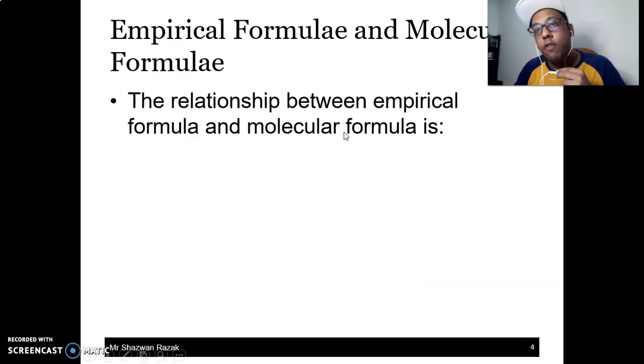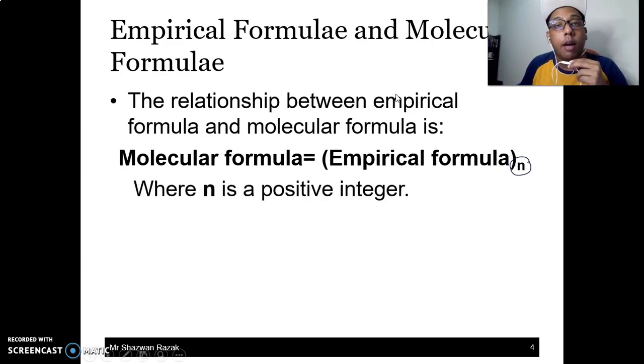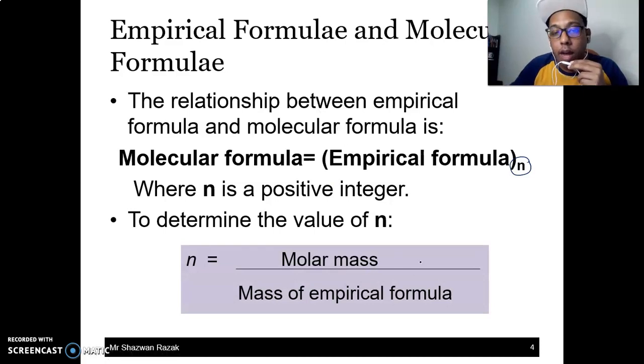So what is the relationship between empirical formula and molecular formula? The relationship is: Molecular formula equals Empirical formula subscript n, where n is a positive integer, can be from 1, 2, 3 and so on. So to find the value of n, we can use n equals molar mass divided by the mass of the empirical formula. Kita kira dia punya relative molecular mass for the empirical formula, bahagi tu, kita akan dapat satu number and that number is known as our n. And kalau kita multiply our empirical formula with n, kita akan dapat dia punya molecular formula.